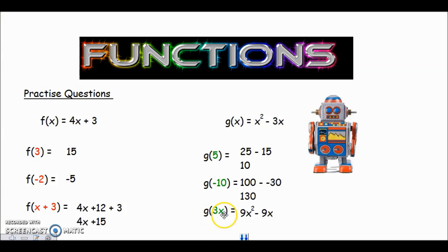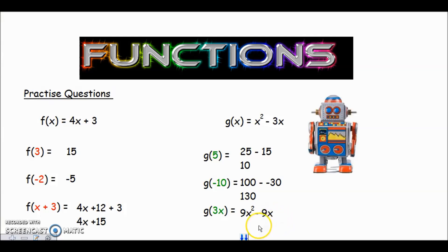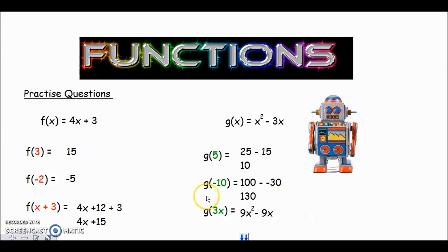The last one is putting 3x in. Remember: you must square everything in the brackets — 3x times 3x gives 9x². Then minus 3 times 3x is 9x. So the answer is 9x² − 9x. I hope that's been helpful.